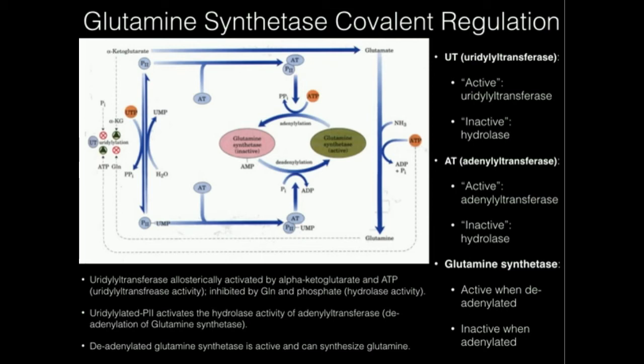When uridylylated P2 combines with adenylyl transferase, the complex acts as a hydrolase and deadenylates glutamine synthetase, making it active. However, if P2 is deuridylylated — meaning it doesn't have a UMP group — it will still combine with adenylyl transferase, but because P2 is not uridylylated, the complex now acts as an adenylyl transferase. It transfers the adenylyl group onto glutamine synthetase, inactivating it.